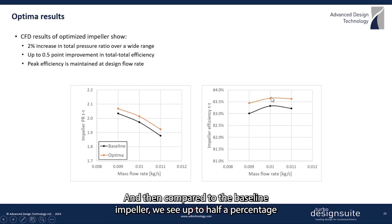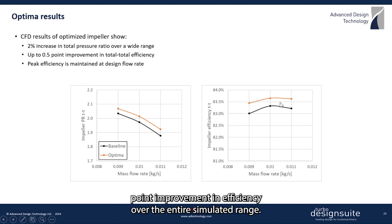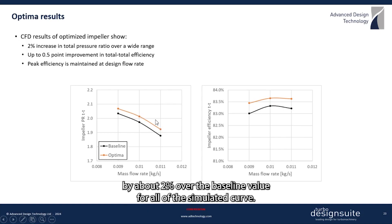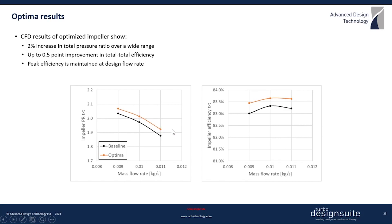Compared to the baseline impeller, we see up to half a percentage point improvement in efficiency over the entire simulated range. As a result, the total pressure ratio has increased by about two percent over the baseline value for all of the simulated curve.